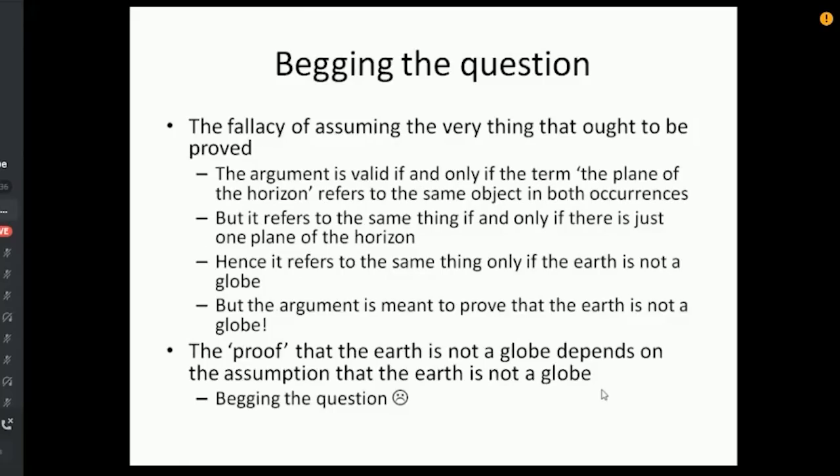So, and again, I presented this last week, we have the fallacy of assuming the very thing that ought to be proved. The argument is valid if and only if the term, the plane of the horizon, refers to or means the same object in both occurrences. It refers to the same thing if and only if there is just one plane of the horizon, since it refers to the same thing only if the earth is not a globe. But the argument is meant to prove that the earth is not a globe. The proof that the earth is not a globe depends on the assumption that the earth is not a globe. There was an amusing comment in the discussion last night on Bev's channel. They're saying that the global argument is, if the earth is a globe, then it's a globe. They're saying that's a ridiculous argument. Well, well, this is the same. And that's not what the global argument is, actually. But this argument here is clearly that if the earth is not a globe, then the earth is not a globe. Begging the question.